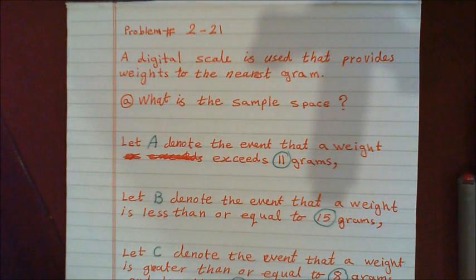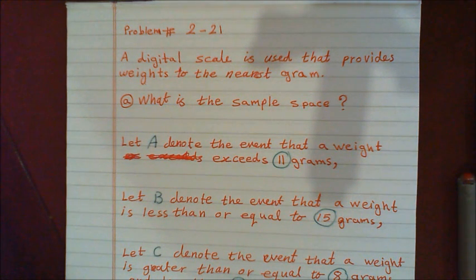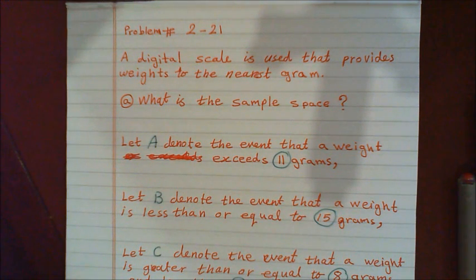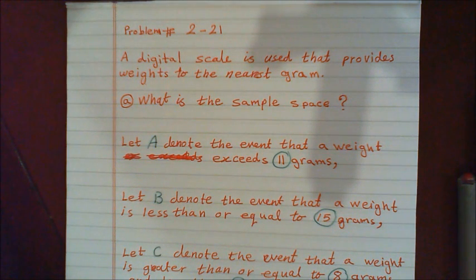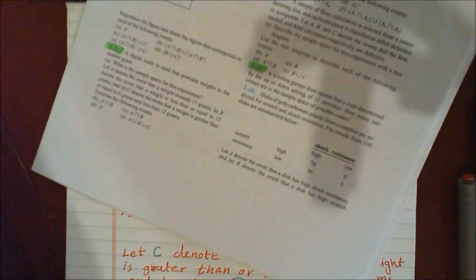By this example, you should have the information and the exercises about the sample space. Now we will have examples about the event, which is a part of the sample space. An event is a group of elements, or at least one element, of a sample space. Let's get an example so everything will be clear.